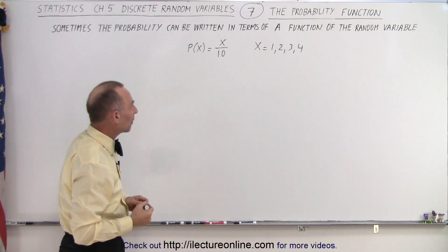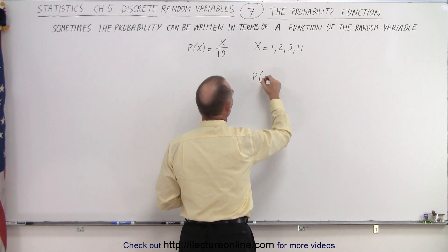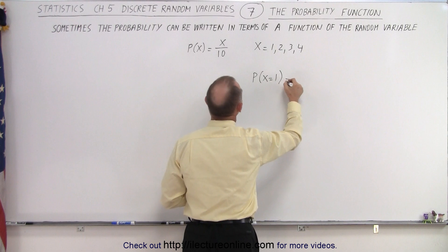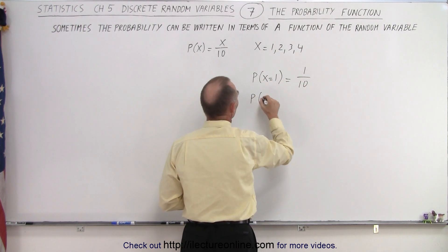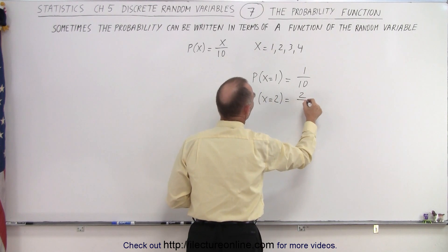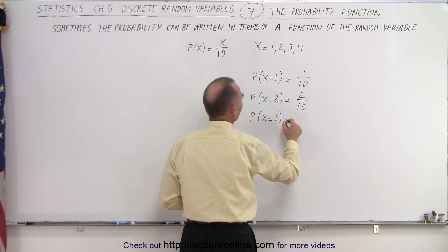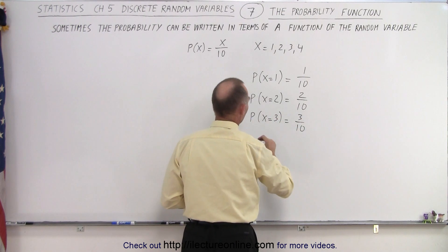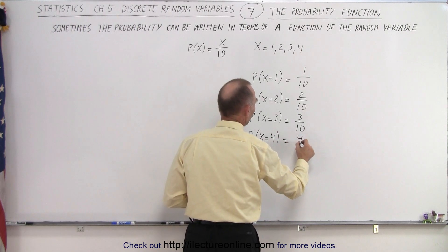Let's go ahead and calculate the probabilities for each of those four values. So the probability when x equals 1 is going to be 1 over 10. The probability for x equals 2 is going to be 2 over 10. The probability that x equals 3 is therefore 3 over 10. And the probability when x equals 4 is equal to 4 over 10.